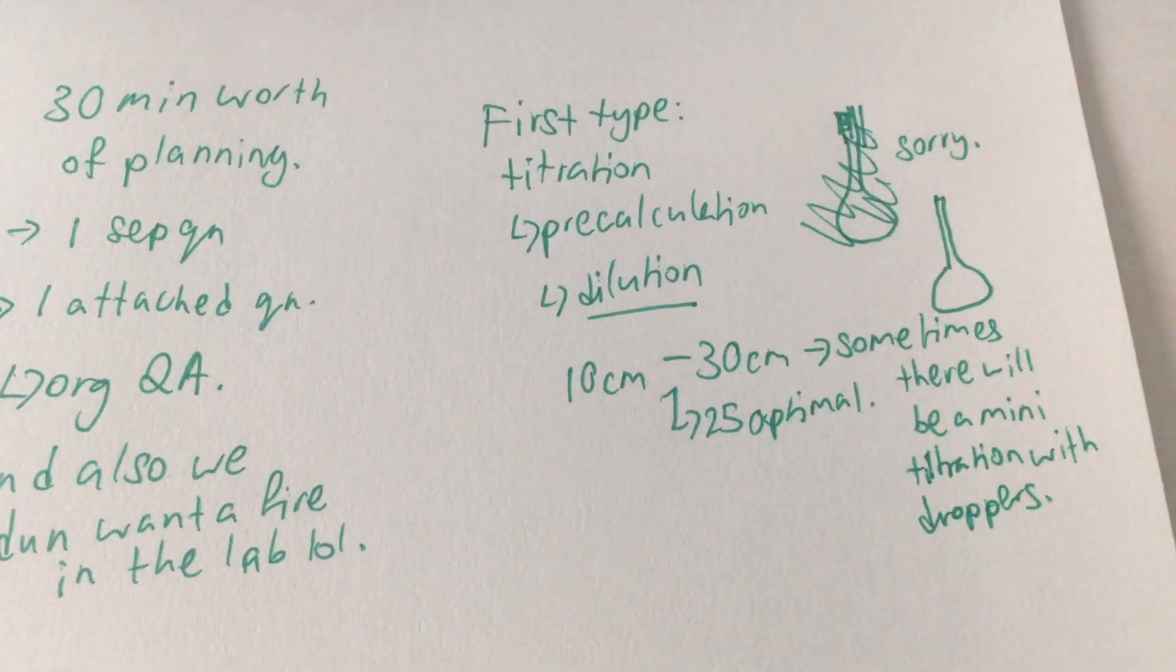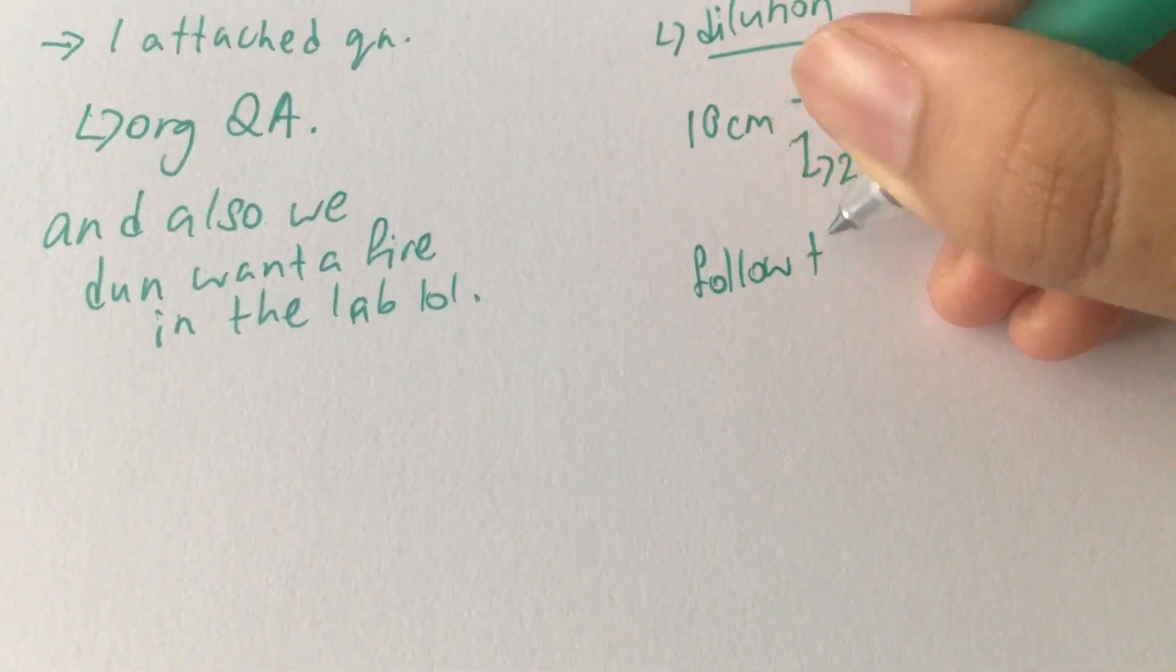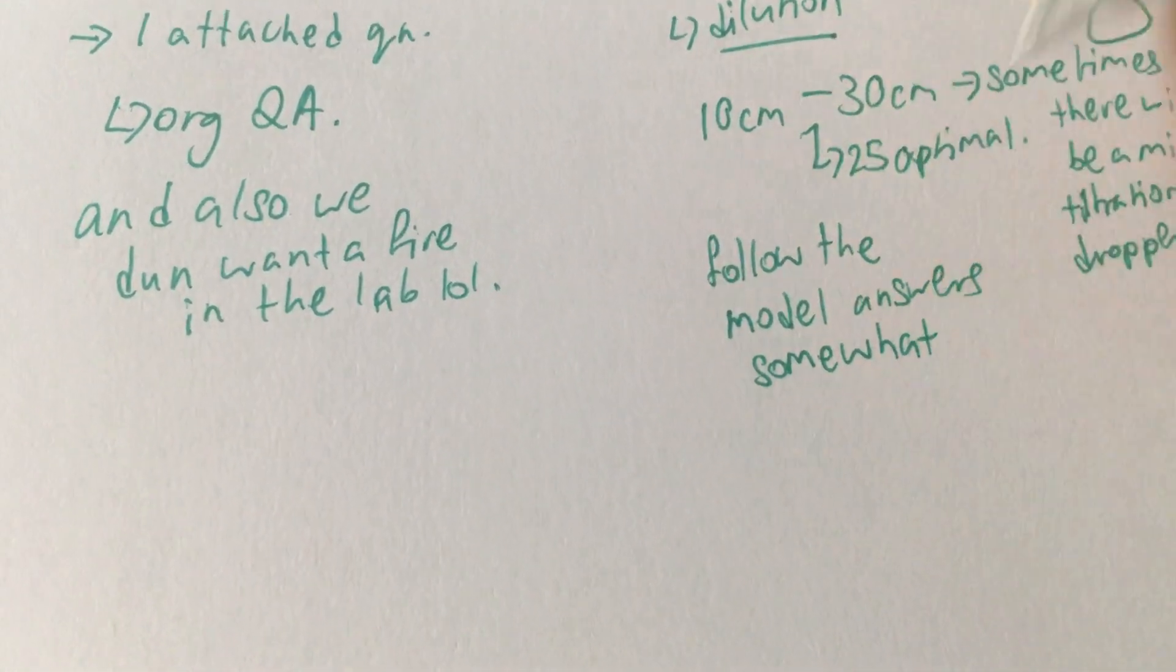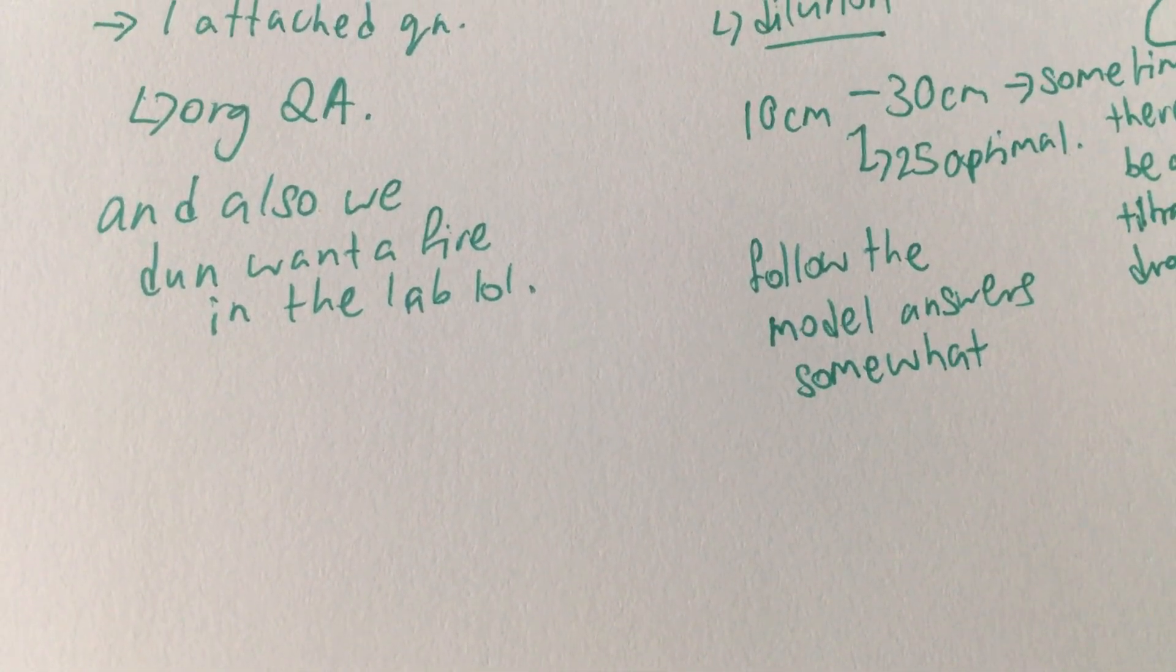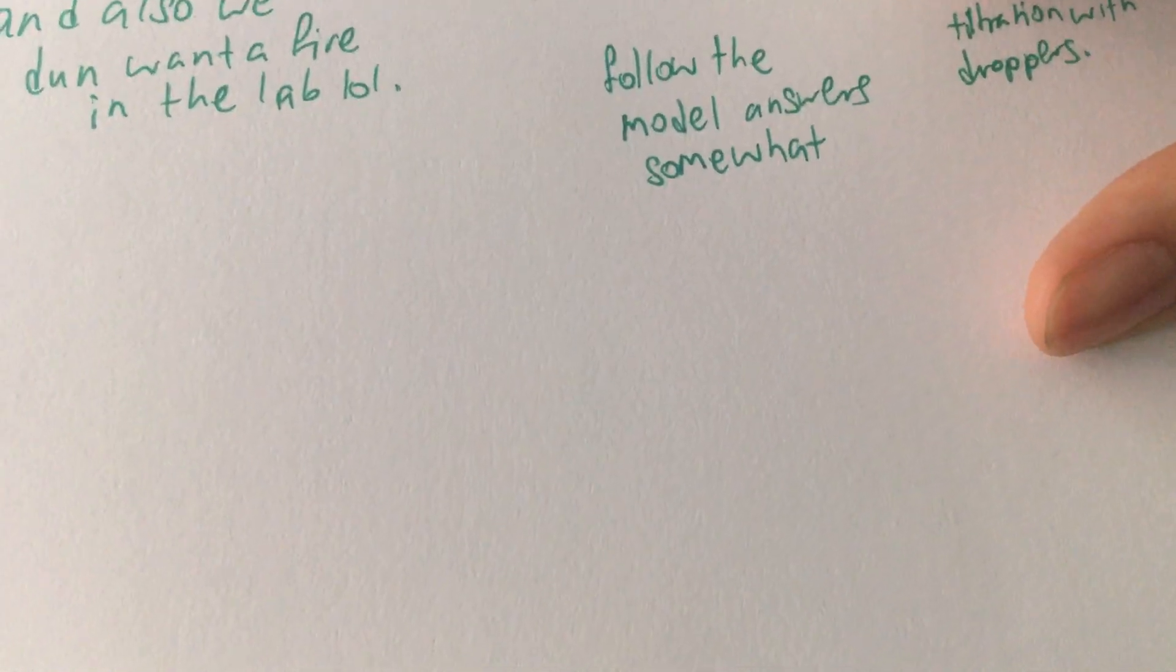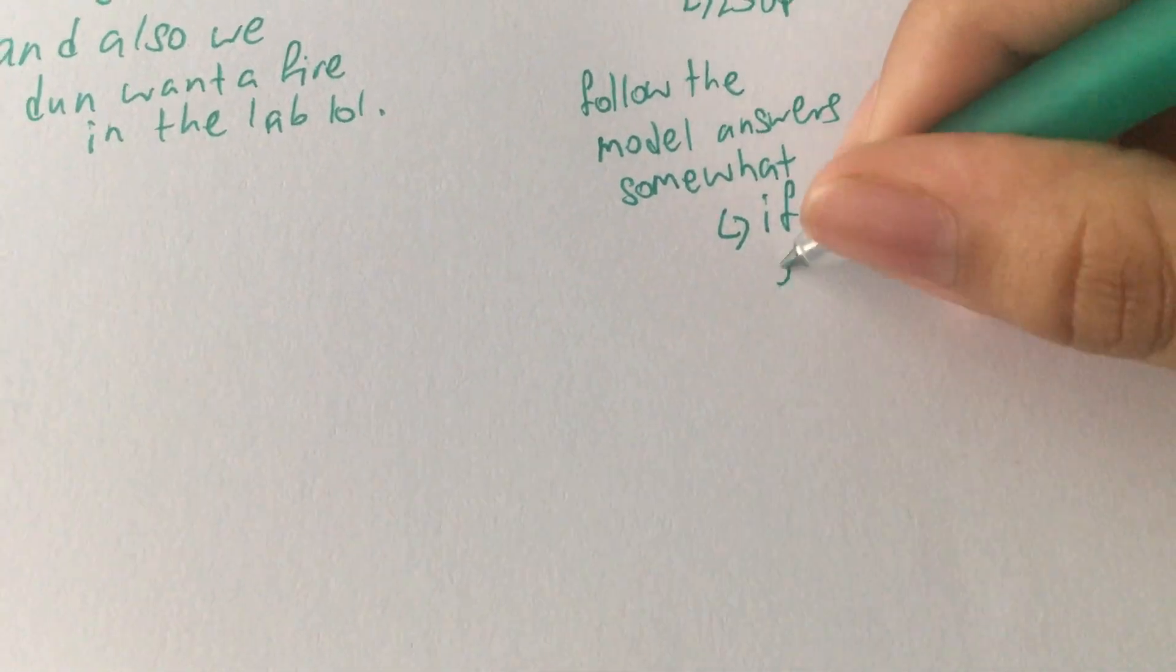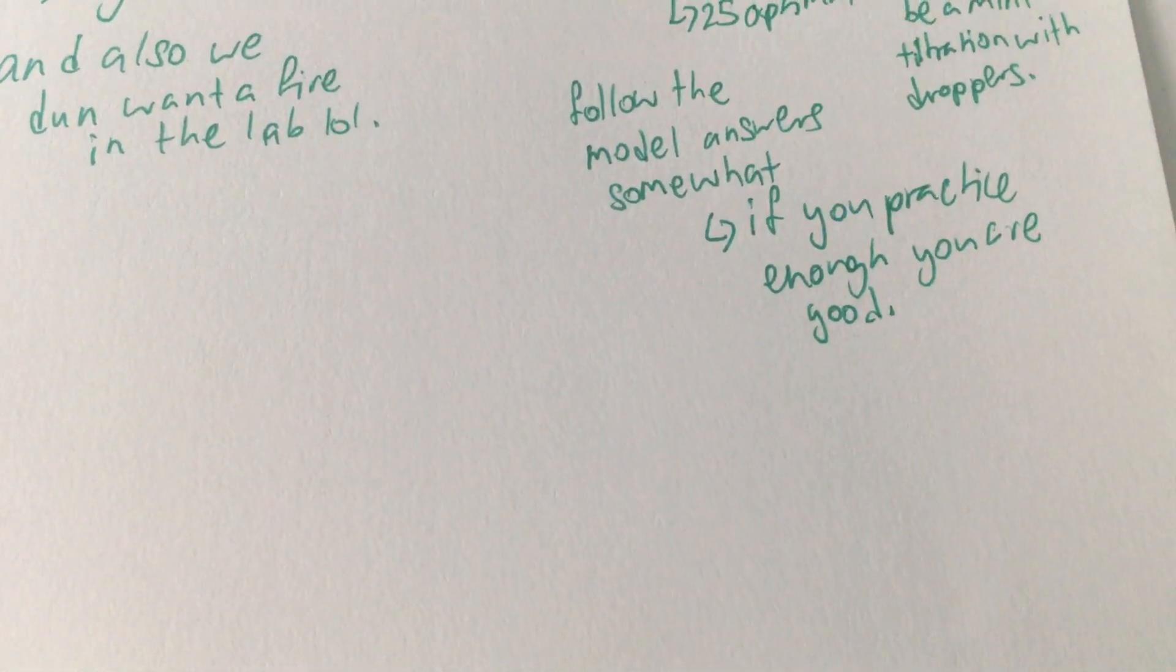So just do all the pre-calculations first. Do it quickly. I think if you've practiced enough, you will be able to do this quickly. And for the main plan, I'm pretty sure the schools would probably give you some template or something like model answers. So you can memorize some of the parts of that answer and then plug in all the relevant details like, for example, the size of the measuring cylinder and things like that. Titration is pretty simple, straightforward. It's just you add one thing to another thing. There isn't anything super complicated to write down.